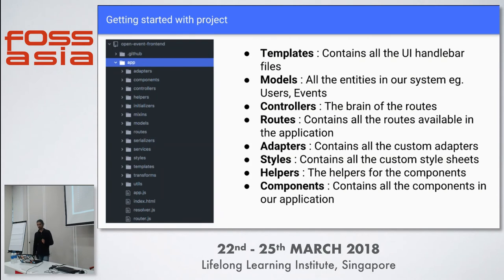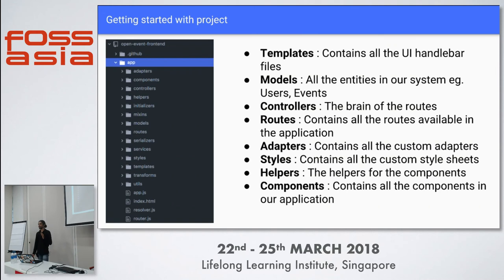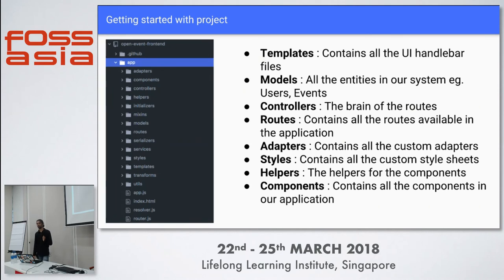We have templates, which are the UI components in our application. For example, we have an event card component, and each component and each route will have a template — it's automatically generated when you generate a route or component. Models, as already discussed, are entities in our system — for example, a user or an event — with properties that are also reflected in the Open Event API.